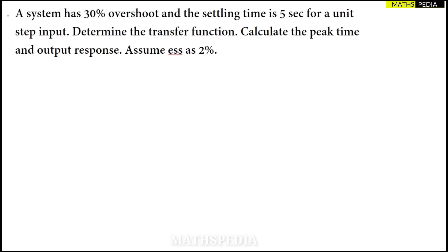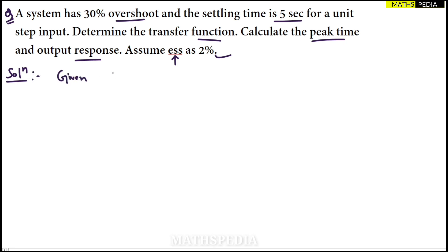We are back with another numerical on time response analysis of control systems. The system has 30% overshoot, meaning the peak overshoot Mp is 30%, and settling time Ts is 5 seconds for a unit step input. We need to determine the transfer function, calculate the peak time, output response c(t), and steady-state error ESS.